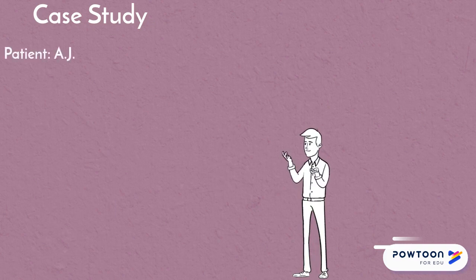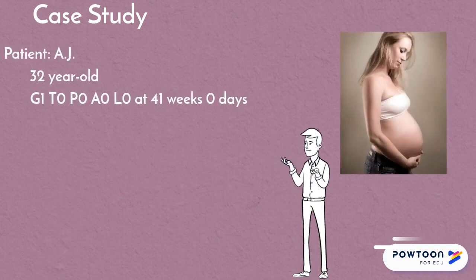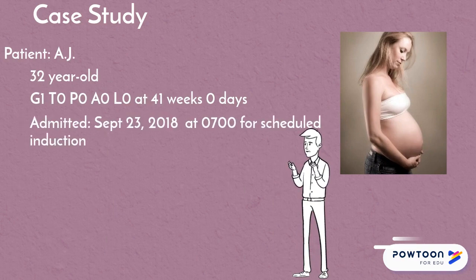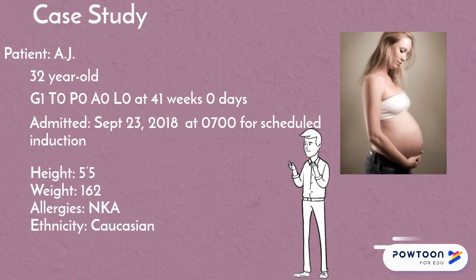Our case study overviews AJ, a 32-year-old Caucasian nulliparous female at 41 weeks gestational age who was admitted to the hospital on September 23rd for a scheduled induction. The patient presented with no known allergies at a weight of 162 pounds and a height of 5 feet 5 inches.